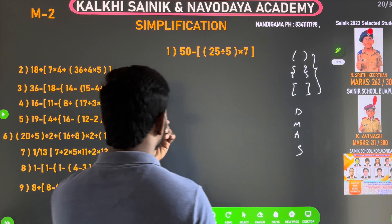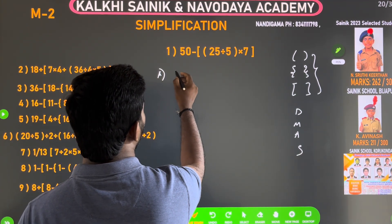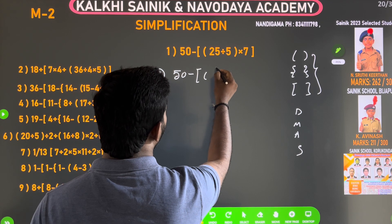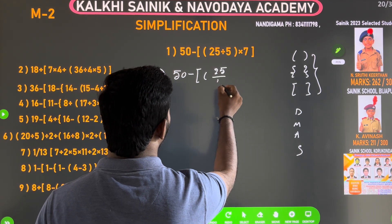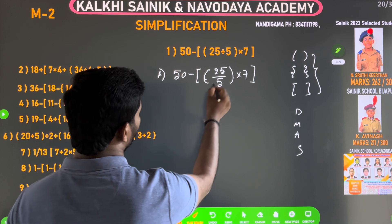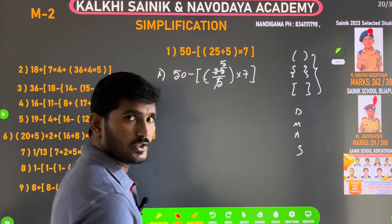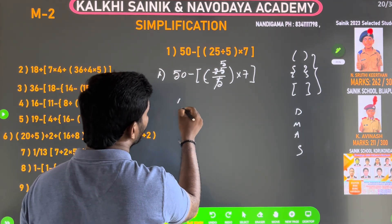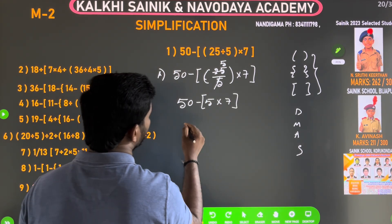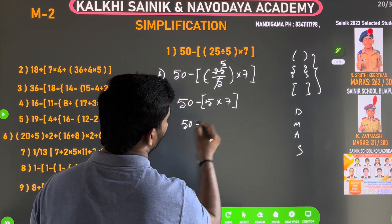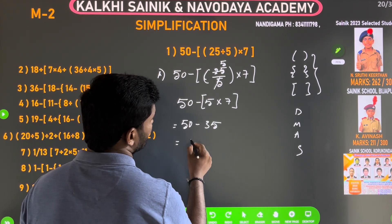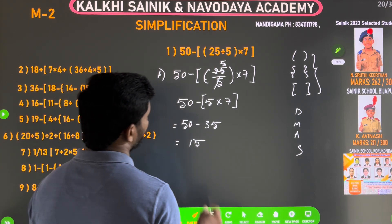The board mass example: 50 minus 25, divided by 25, and 25 by 5 into 7. Working through this: 35 is the board mass. 15 minus 35 is the board mass. This is the conversation from the board mass.